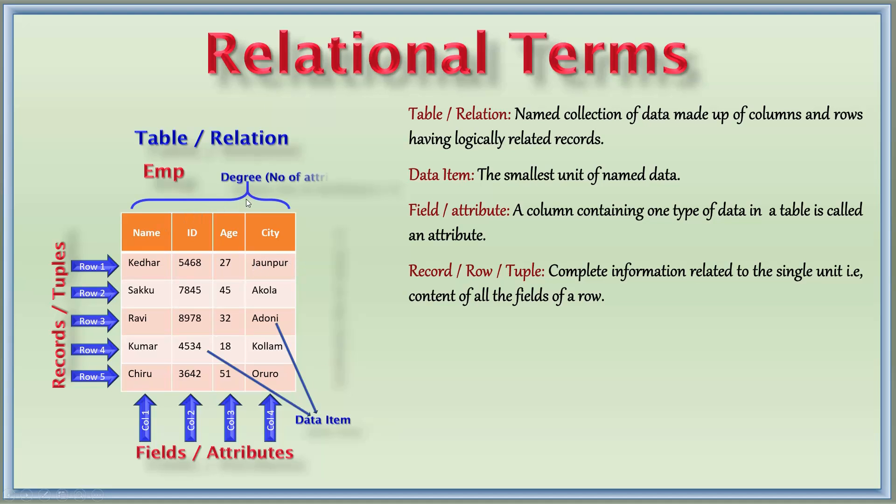Next, the number of columns are called degree, or we can also say number of attributes. Here 1, 2, 3, 4. So 4 columns are there, the degree of this table is 4. The number of attributes in the relation determines the degree of the relation.